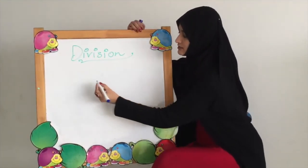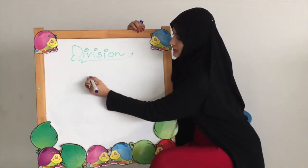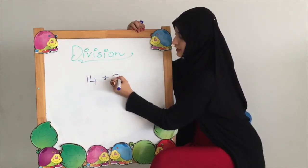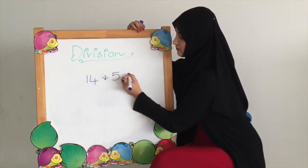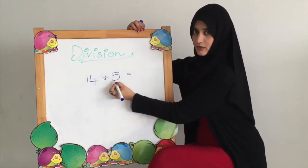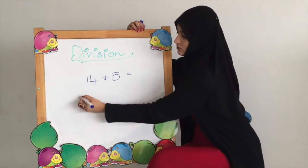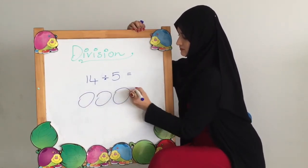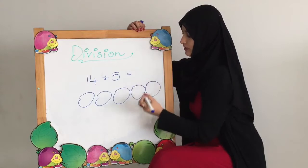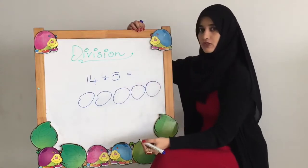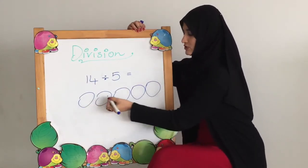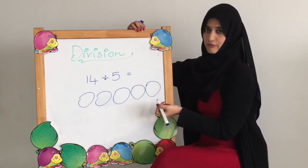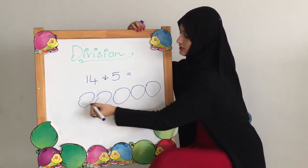The first example is 14 divided by 5. The second number is the number of sets, so we make 5 sets. And now we are going to distribute the number 14 so each set should get an equal number of balls or things.